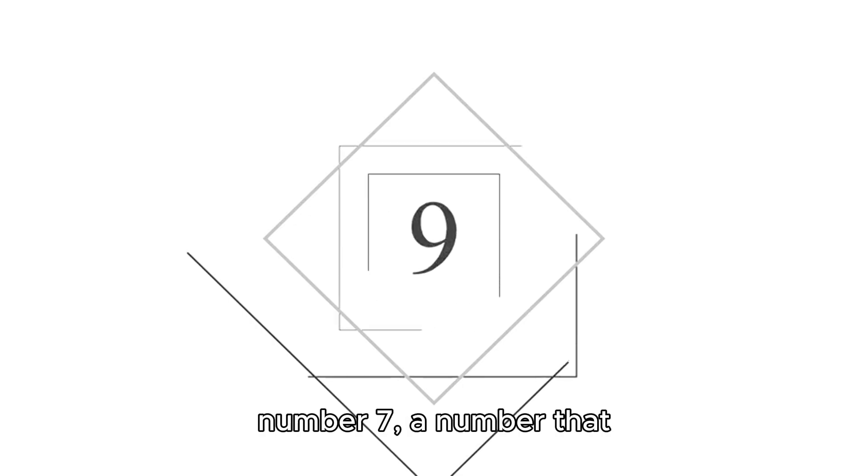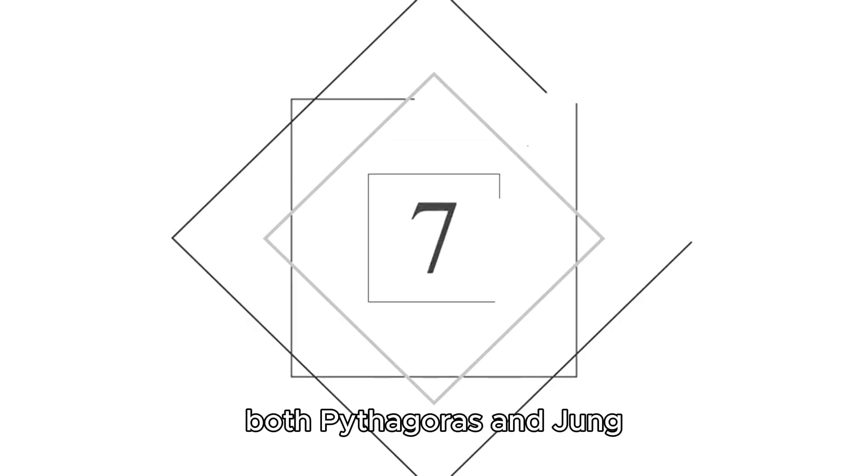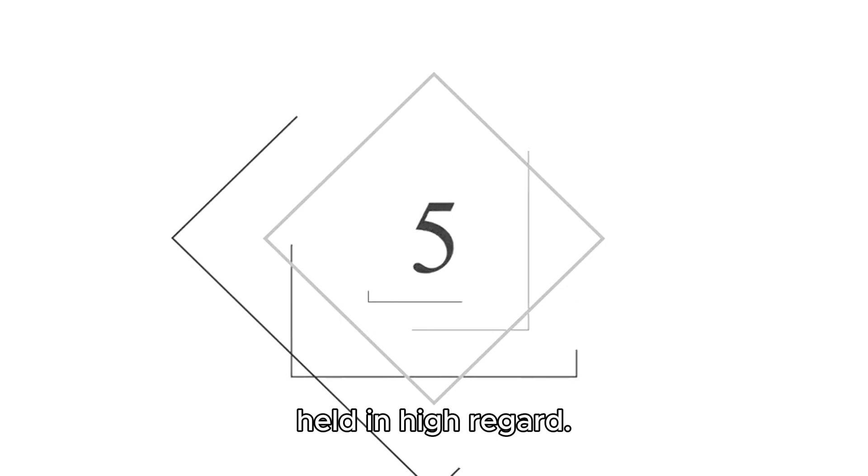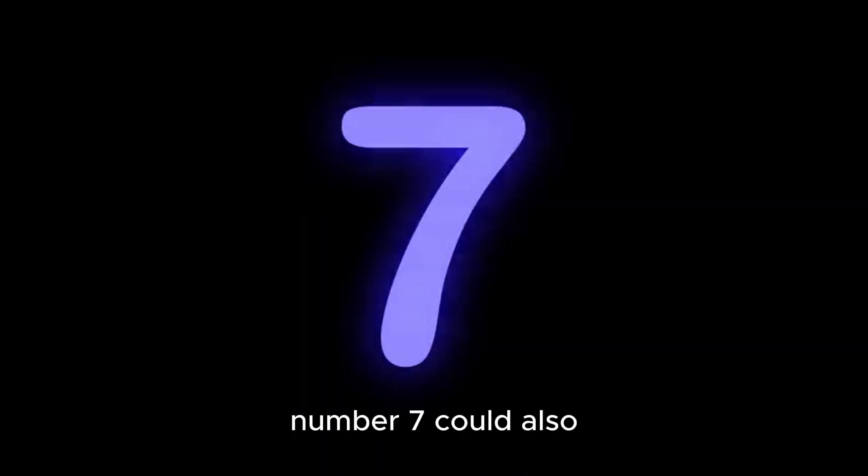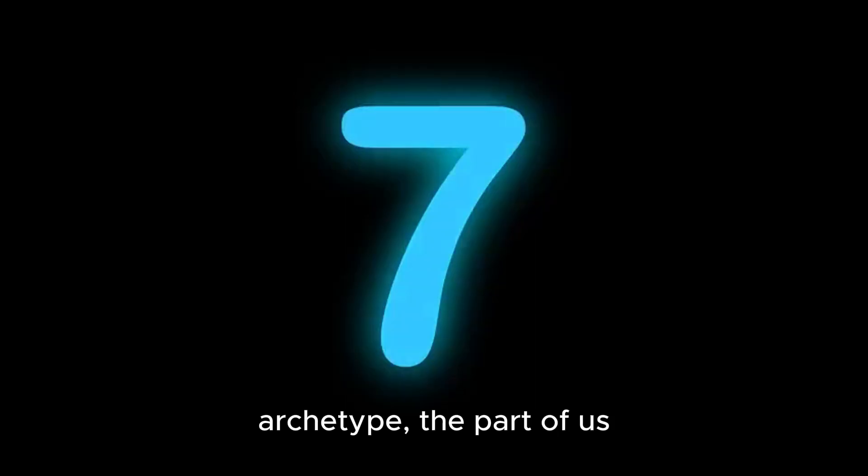And let's not forget the number 7, a number that both Pythagoras and Jung held in high regard. In numerology, it represents spirituality, introspection, and the search for truth. But in Jung's world, the number 7 could also represent the seeker archetype, the part of us that longs to understand the deeper mysteries of life.